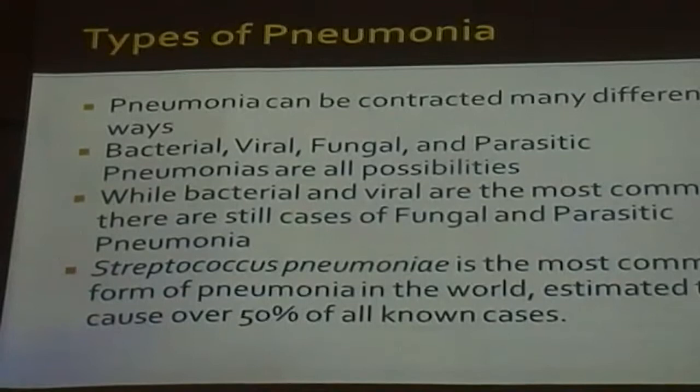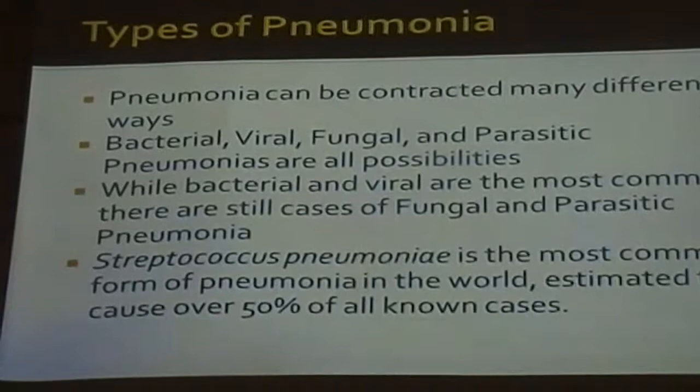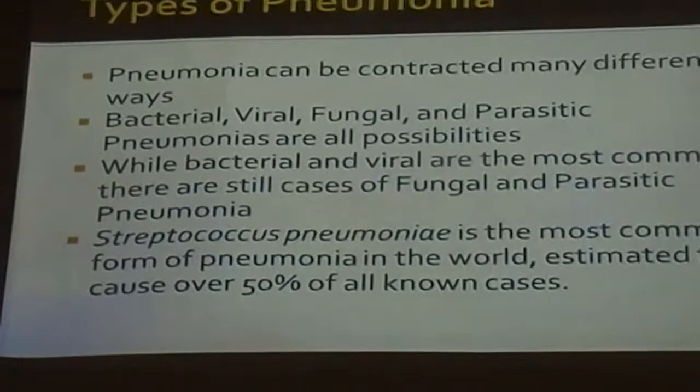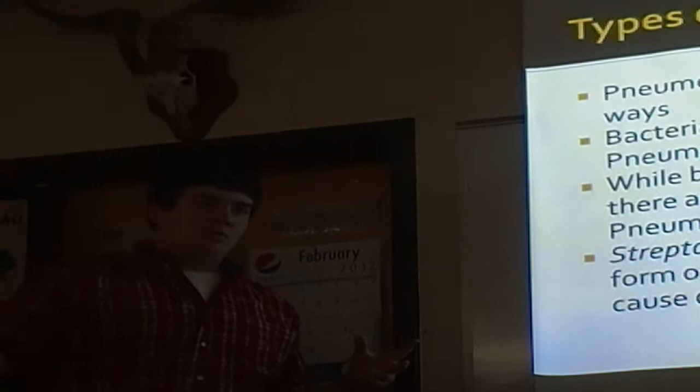Bacterial and viral are the most common, with Streptococcus pneumoniae being the most common bacteria, causing over 50% of cases — and if you've ever had pneumonia, that's probably the one you contracted. The reason fungal and parasitic forms aren't as commonly contracted is that fungal spores and parasites are larger organisms and not as easily transferable human to human, since it's mostly contracted through the air — transmitted by a sneeze or coughing, just like a common cold.